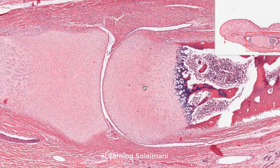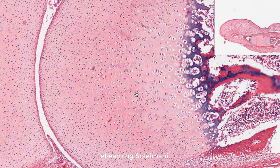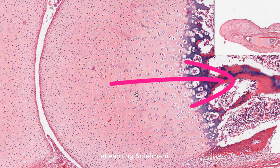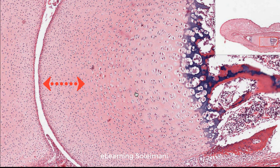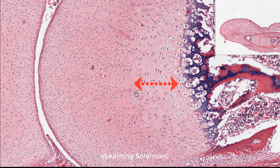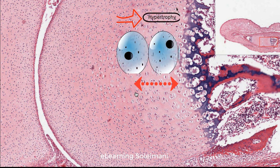Ossification between the cartilage occurs from the articular cartilage towards the diaphysis and consists of five stages. The first stage involves resting cartilage cells. In the second stage, cells divide and align in rows, called cell proliferation. At the third stage, cells grow larger due to the entry of vascular parts and increased nutrient supply.